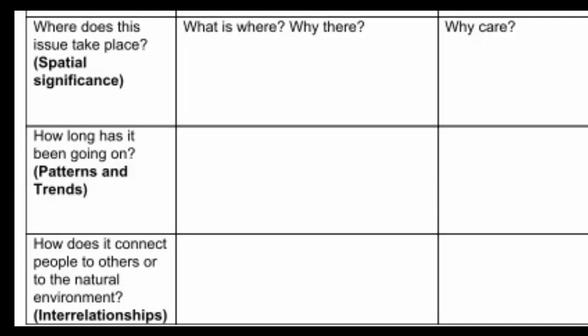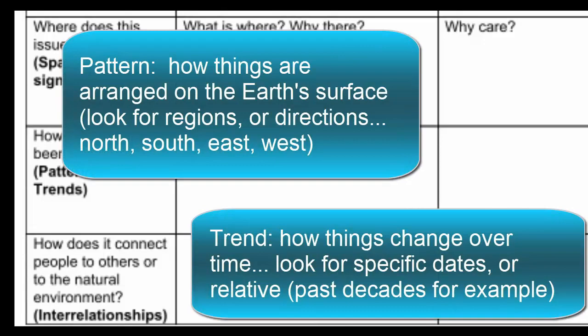We look at patterns and trends. So pattern means how are things arranged on the Earth's surface, whereas a trend looks at how things change over time. Are there dates involved?